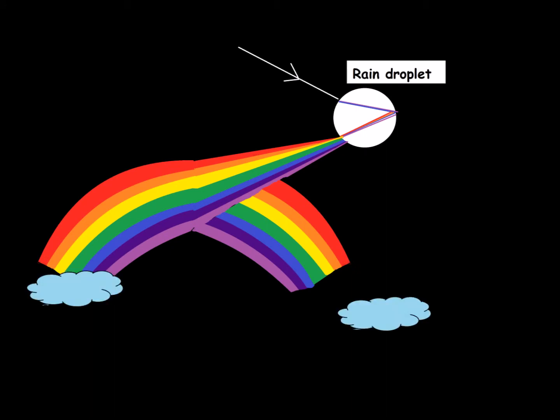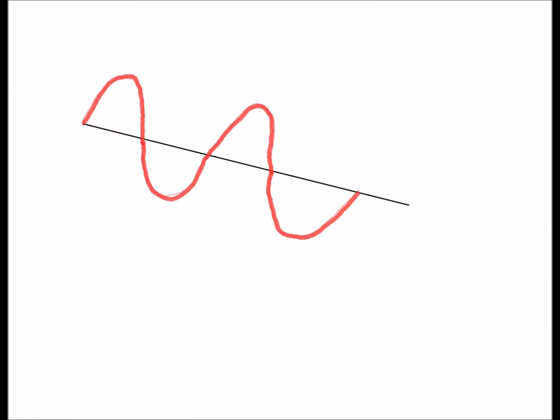So what is light made of? Early theories suggest that light is a transverse wave, also called an electromagnetic wave.